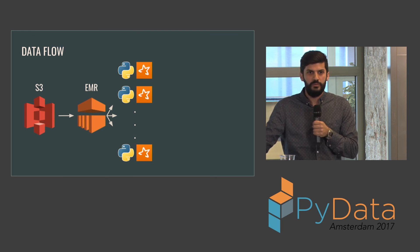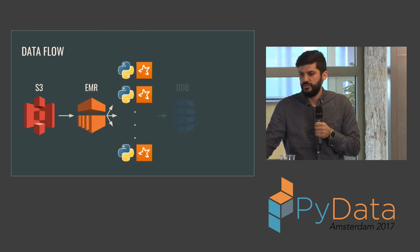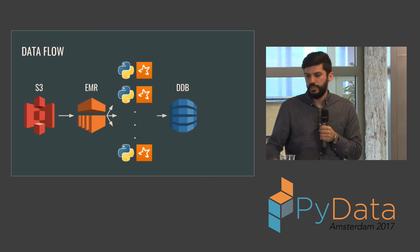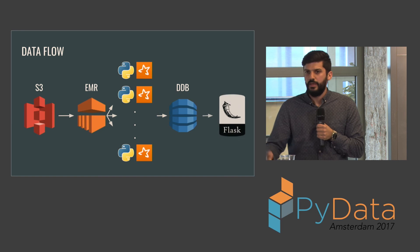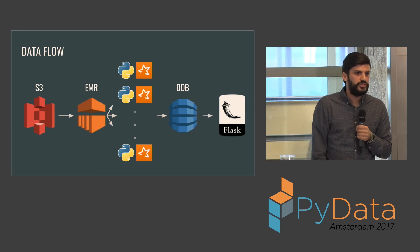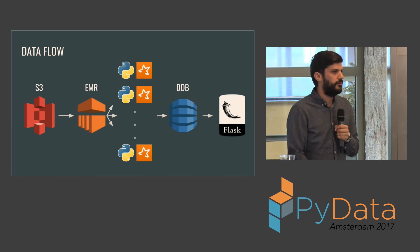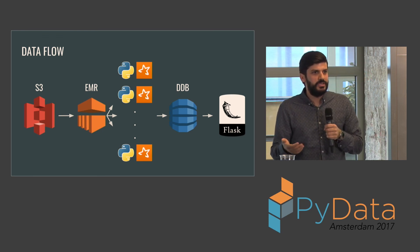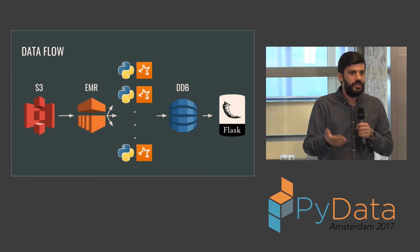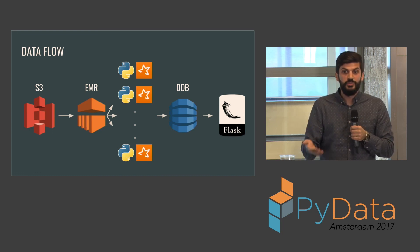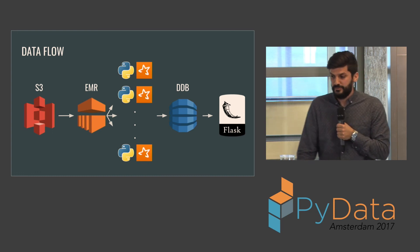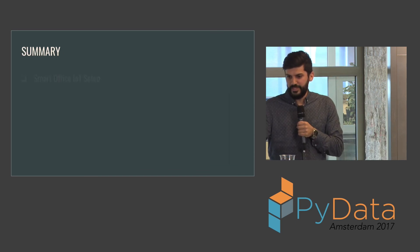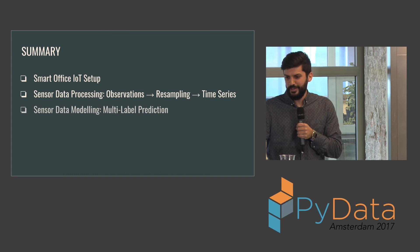Putting everything together: data flows from sensors to gateways to AWS IoT, Kinesis Firehose, and into S3. The second part of the data flow has us loading data from S3, running EMR jobs that parallelize our Python code using Spark across sensors or rooms, saving predictions into DynamoDB, and plugging in a small Flask API to serve those predictions. The last step depends on the use case and what you're actually using your smart application for.